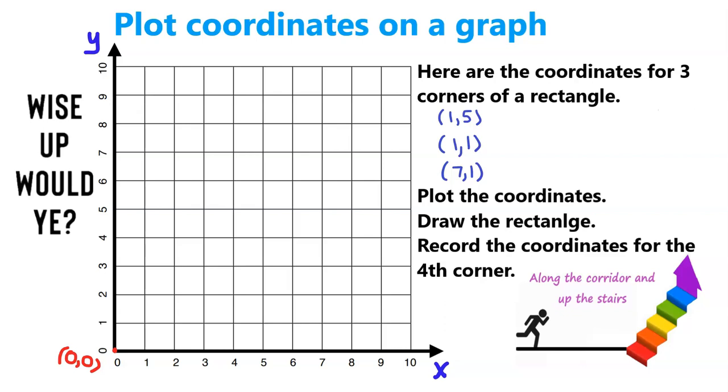(1, 5): we go along the x-axis to 1 and up the y-axis to 5, along the corridor, up the stairs. The next one, (1, 1): we go along the corridor and up the stairs. And there's our second corner of the rectangle. And now the last, the third corner we're given is (7, 1). So plot the coordinates, we've done that.